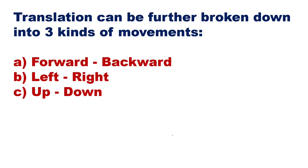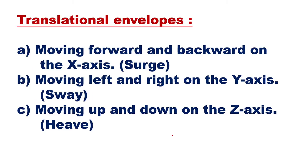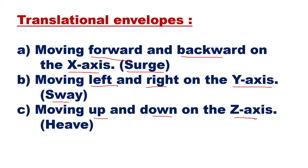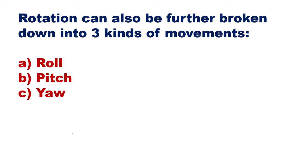Translation motion can be further broken down into three kinds: forward/backward on the x-axis (also called surge), left/right on the y-axis (also called sway), and up/down on the z-axis (also called heave).